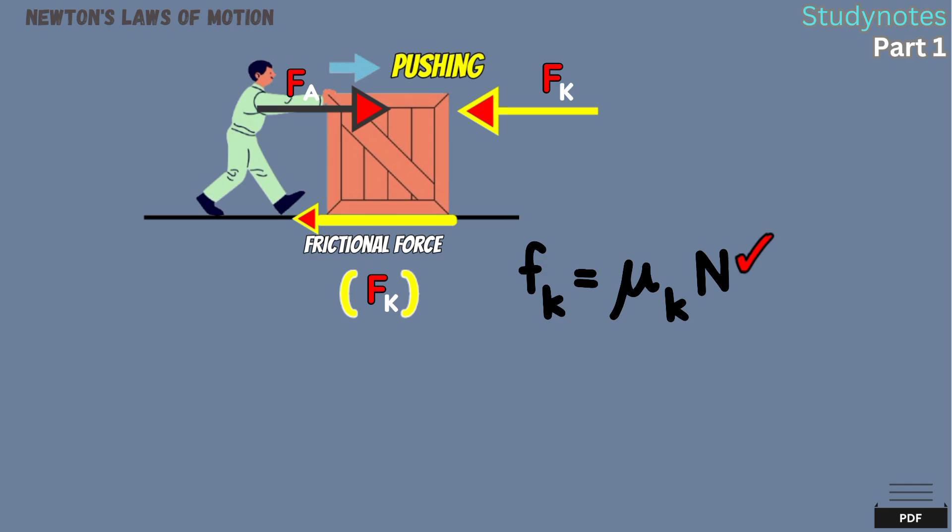This is the formula to calculate the frictional force, whereas this is the symbol which represents the coefficient of friction, and this is the normal force.